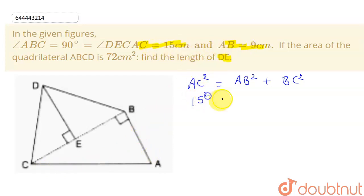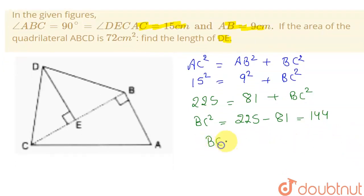So it will be 15 square and AB is given to us as 9, so it will be 9 square plus BC square I have to calculate. So 15 square is 225 and 9 square is 81 plus BC square. So I can write my BC square to be 225 minus 81 which will give me 144. So by this I can write my BC to be under root of 144 which will be equal to 12.